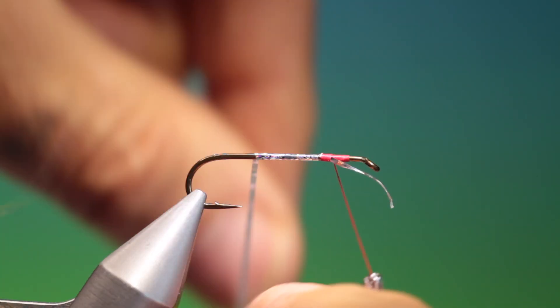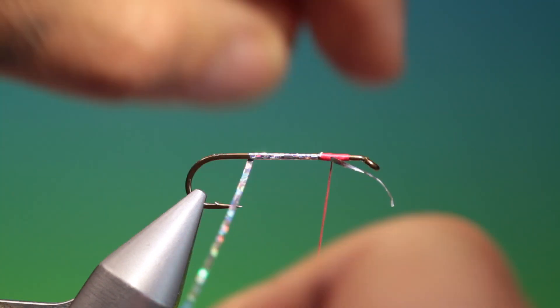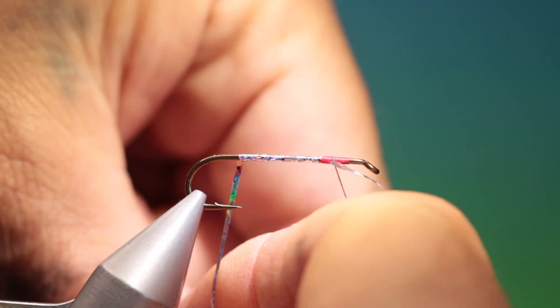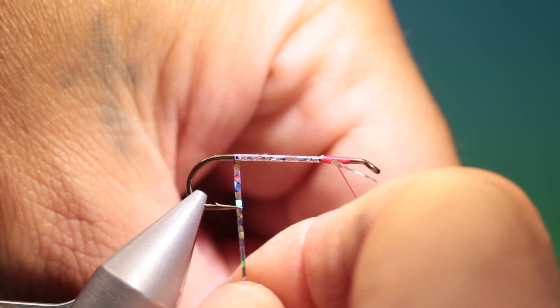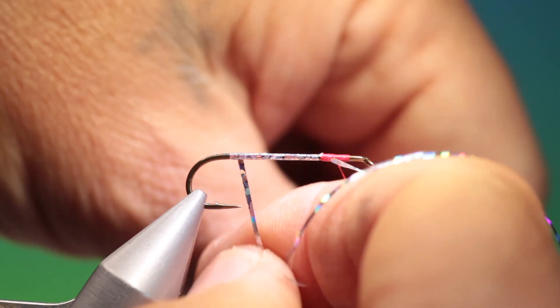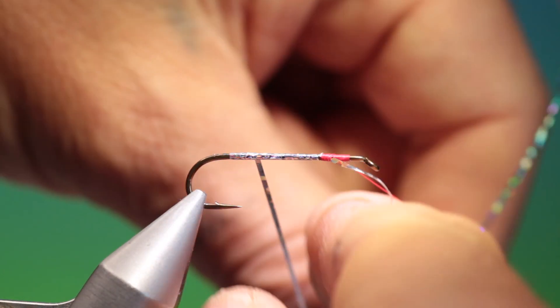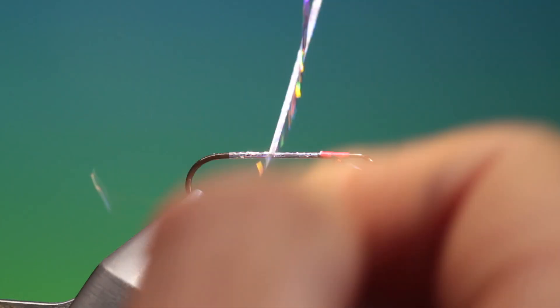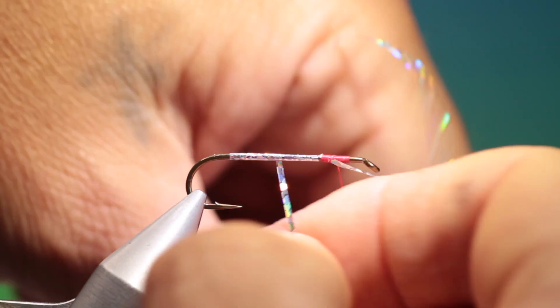The original had flat silver tinsel and a polythene strip wrapped over the body. So we go back to about just after the hook point and then we can go forward again. It's not imperative that this is all neat because we're going to cover this with pearl tinsel. So we go all the way up here again.